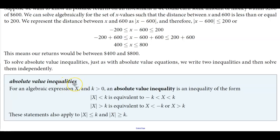For absolute value inequalities, for an algebraic expression X and k > 0, an absolute value inequality is an inequality of the form: |X| < k is equivalent to -k < X < k.